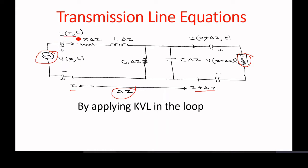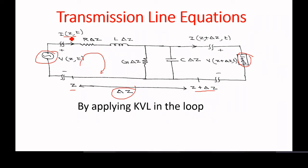The voltage at the source is v(z, t) and the corresponding current is i(z, t) — a function of distance as well as time. Similarly, at z plus delta z, the corresponding voltage is v(z + delta z, t) and the corresponding current is i(z + delta z, t).